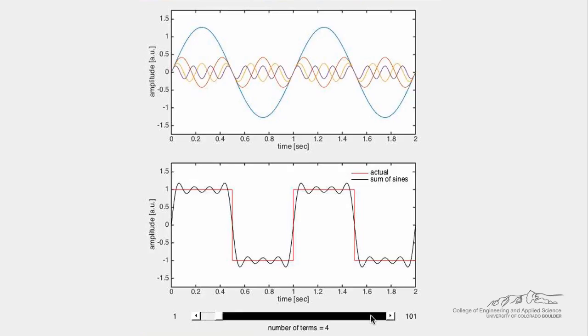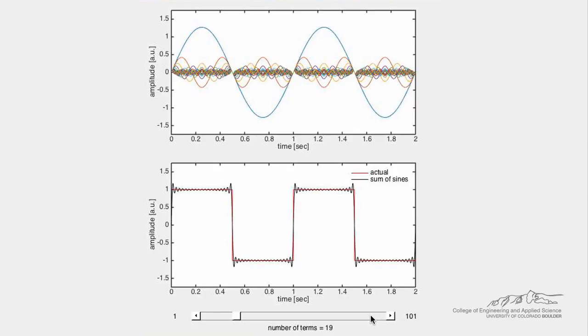The more terms in our Fourier series, the closer it becomes to the actual square wave. The Fourier series will be exact in the limit where the number of terms is infinity.